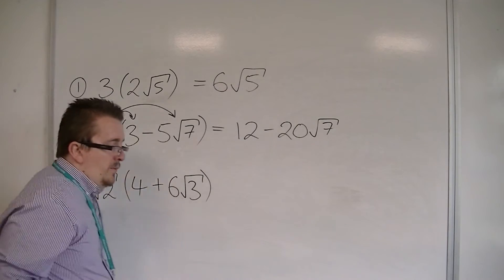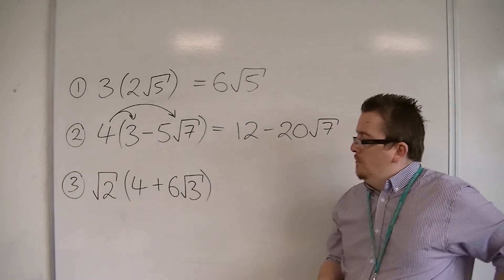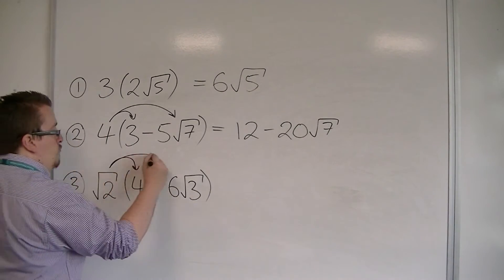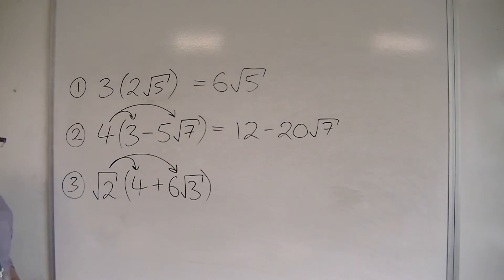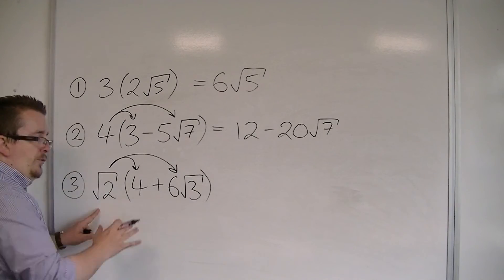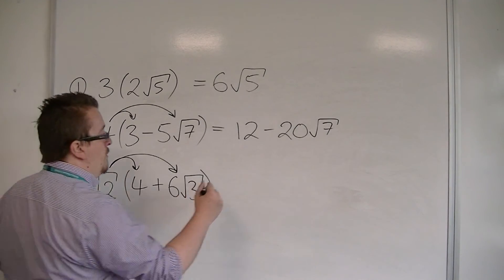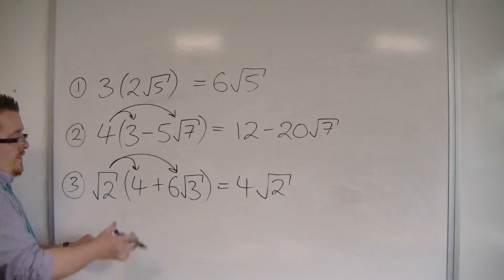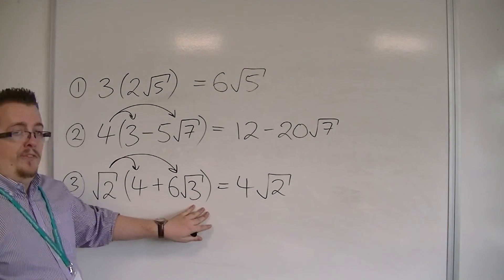The last one's the more difficult. Number three. So we've got root two times the four, and then we've got root two times the six root three. So the root two times four, well, that could be written as four root two.